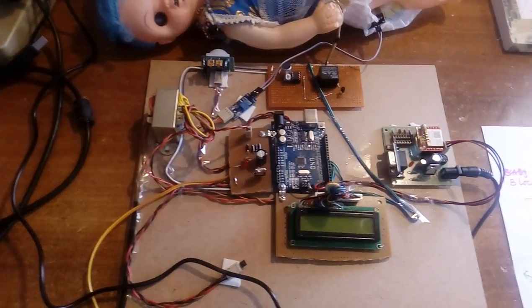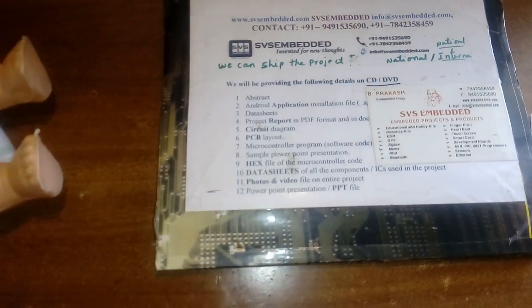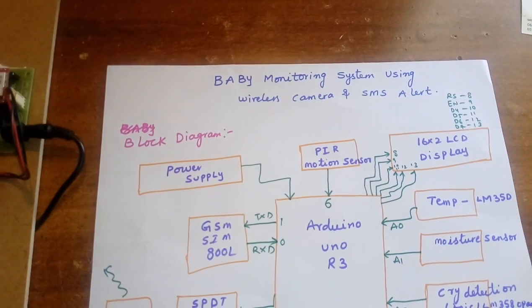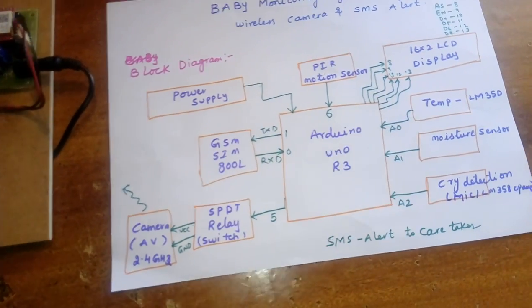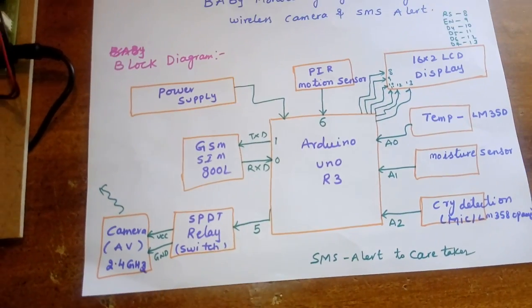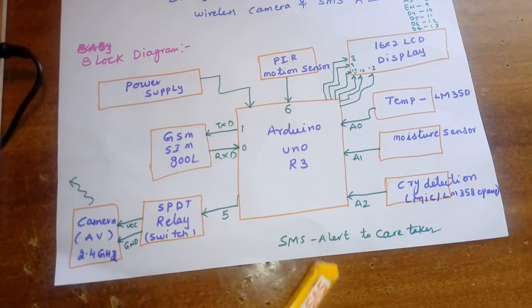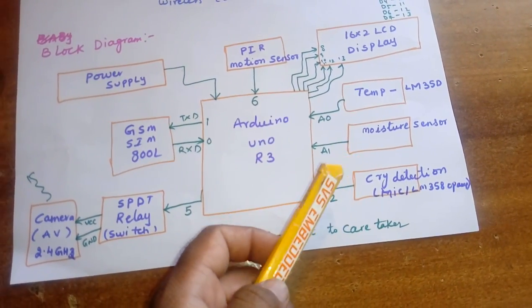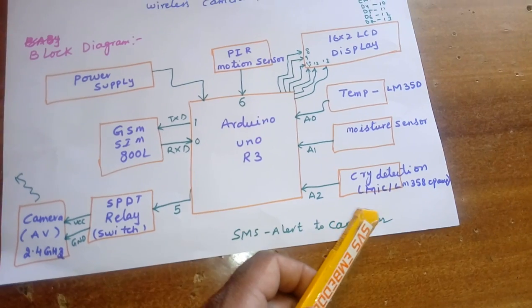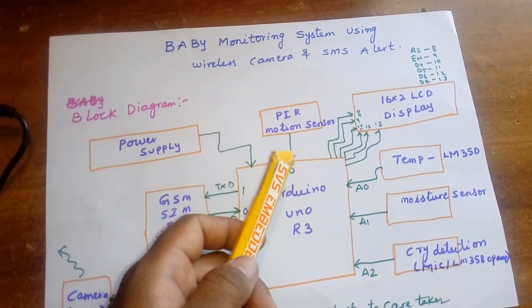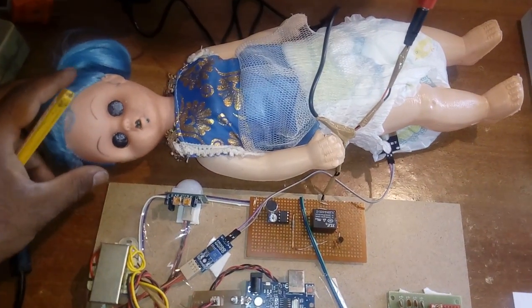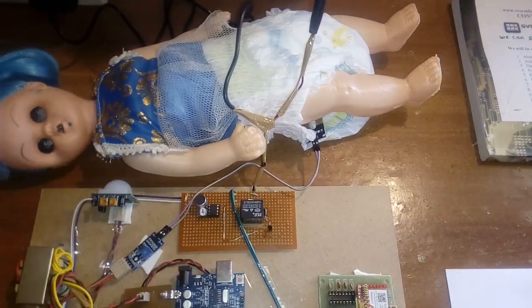Hi, we are from SVS Embedded. The project is called Baby Monitoring System Using Wireless Camera and SMS/GSM Alert. In this project I am using an Arduino UNO R3 development board with the ATmega328. We are using four sensors: a temperature sensor, a moisture sensor, a cry detection mic using the LM358 operational amplifier, and one PIR motion sensor to detect body movement.